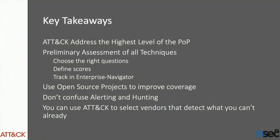In conclusion, here are the key takeaways. ATT&CK addresses the highest level of the Pyramid of Pain. You should start with a preliminary assessment of all the techniques — this way you will know the matrix and have a clear picture of where you should start. To do a successful preliminary assessment, you need to choose the right questions for your organization, define scores that make sense, and track your progress somewhere such as the ATT&CK Navigator so you can show your management what you've been doing. Try to leverage open source projects to improve your coverage and speed up your detection. Do not confuse alerting, hunting, reporting, and forensics. And you can use ATT&CK to make a selection of vendors that cover techniques you cannot detect with what you currently have.